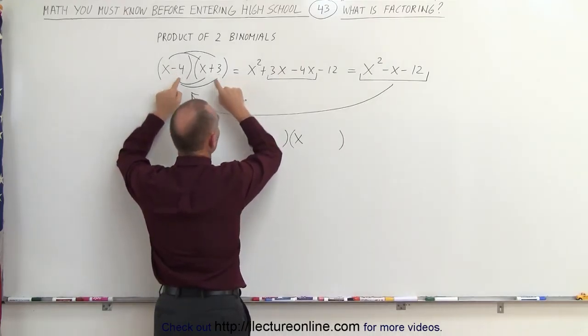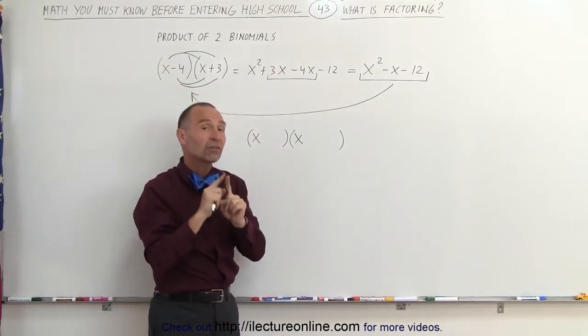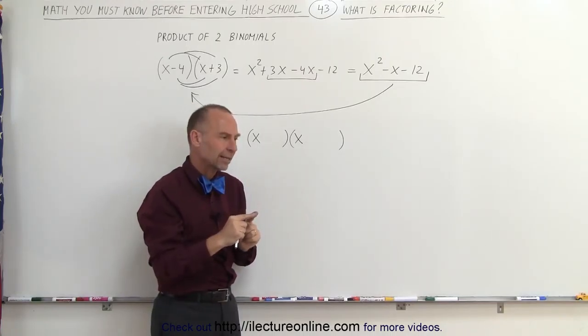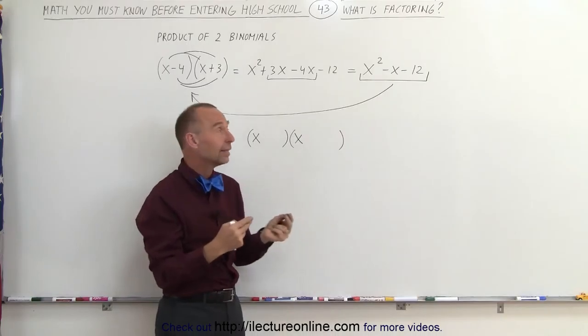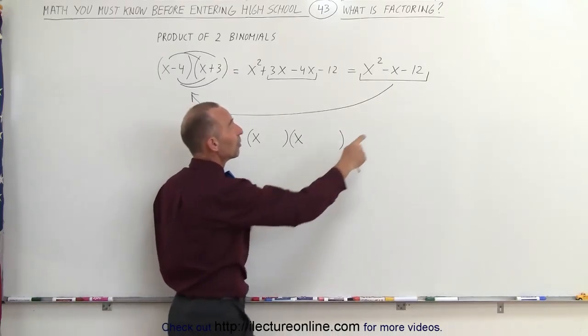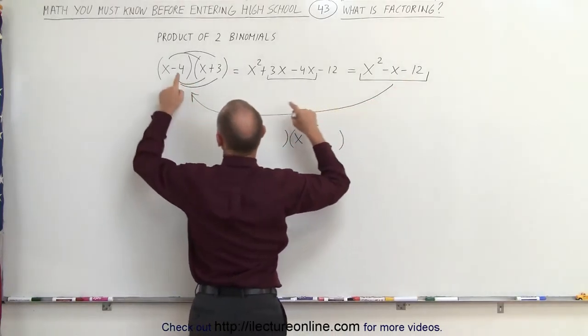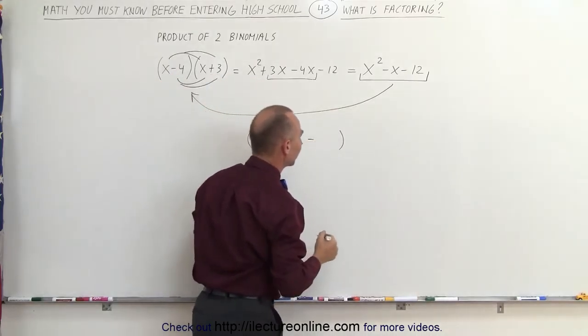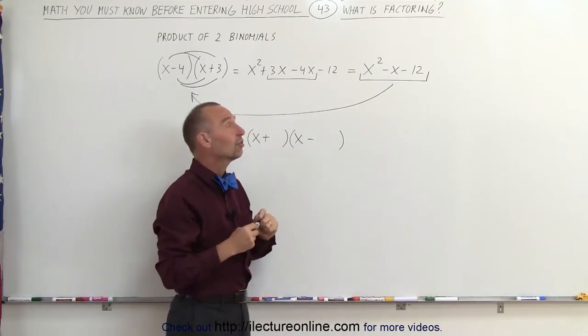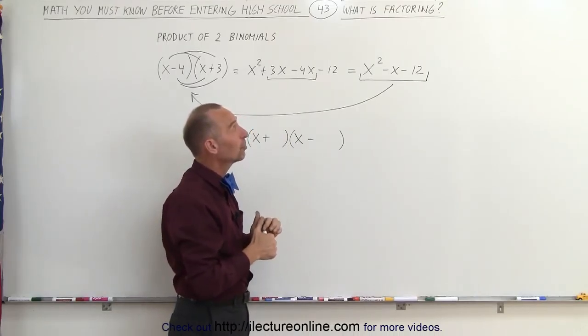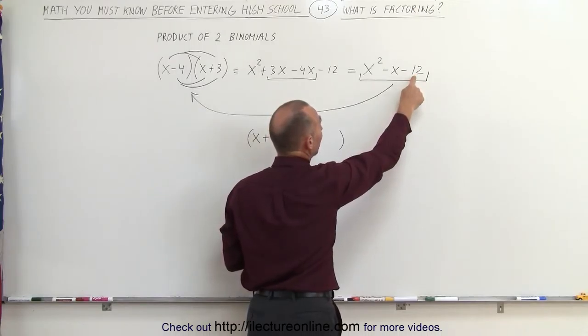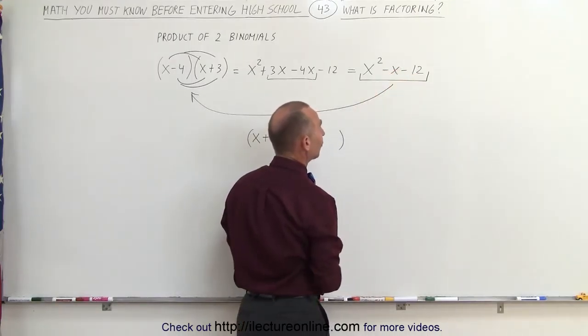Next we can look at the signs and say if I look at the last term it's a negative sign. How do I get a negative number here? You can only get a negative number by multiplying a positive times a negative number, because if you multiply two positives together you get a positive result. You multiply two negatives together you get a positive result. So the only way to get a negative number here is to multiply a positive and a negative number together. So one must be positive one must be negative.